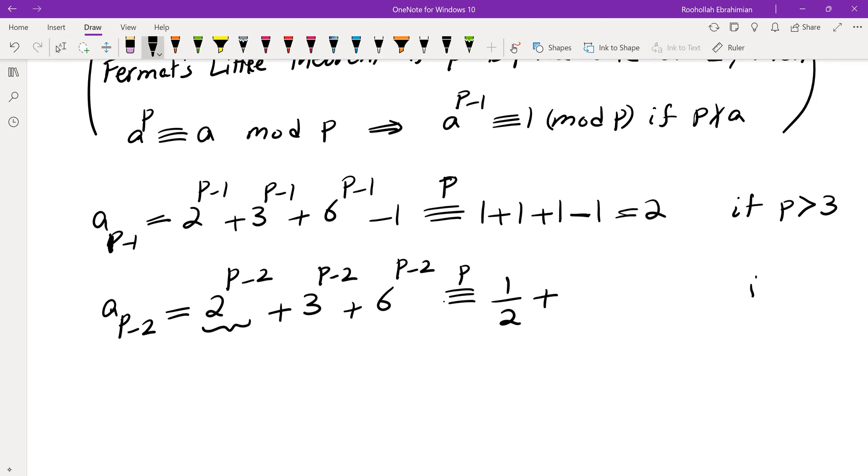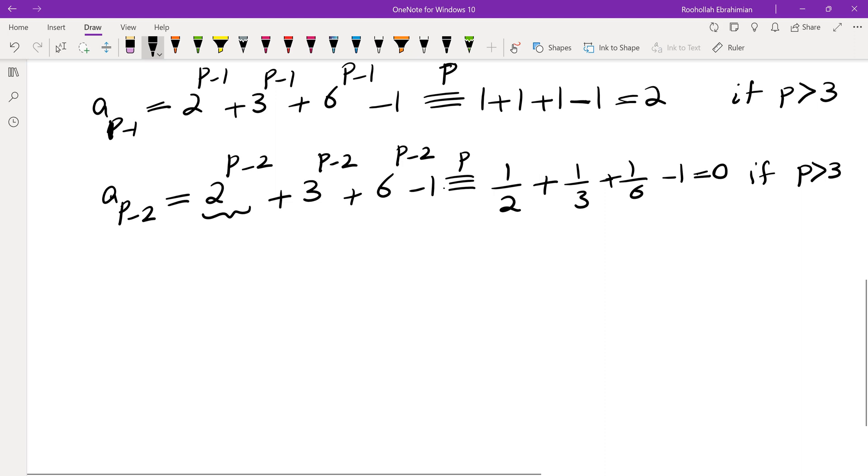As long as p is greater than 3 with the same condition. The next term, and there's a negative 1 here, the next term is 1 third and then 1 sixth and then minus 1. And of course that's exactly 0. So what does that mean?